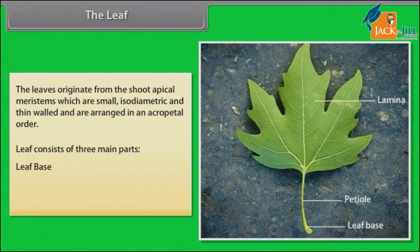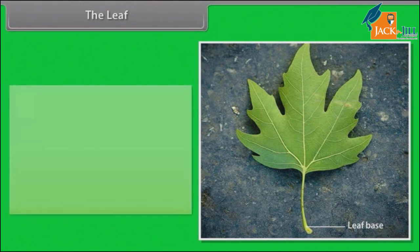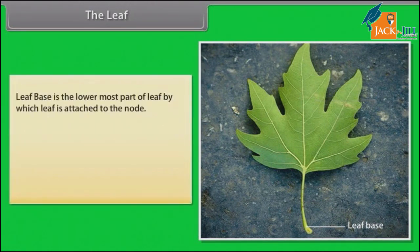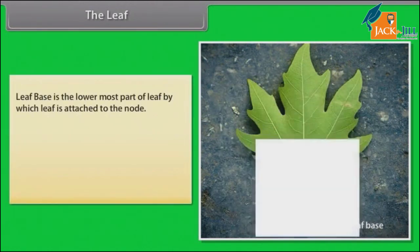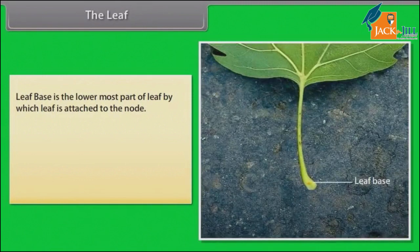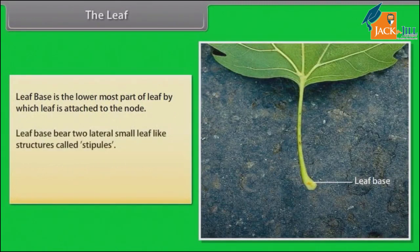Leaf consists of three main parts: leaf base, petiole, and lamina. Leaf base is the lowermost part of the leaf, by which the leaf is attached to the node. Leaf base bears two lateral, small leaf-like structures called stipules.